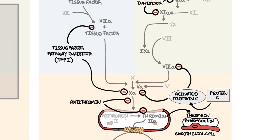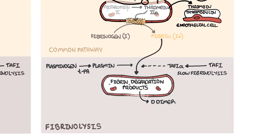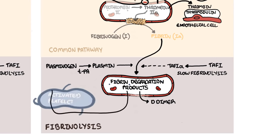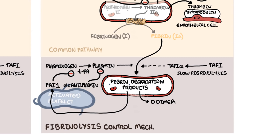Those were the antithrombotic pathways. There are also fibrinolysis control mechanisms. We already discussed thrombin-activatable fibrinolysis inhibitor, which slows fibrinolysis. Another mechanism is plasminogen activator inhibitor-1, or PAI-1, which inhibits TPA and thus prevents plasmin formation. Additionally, alpha-2-antiplasmin inhibits plasmin activity directly, meaning fibrin is not broken down and the clot is preserved. On a side note, tranexamic acid is a medication used to stop bleeding by inhibiting TPA and preventing fibrinolysis, keeping the clot intact.